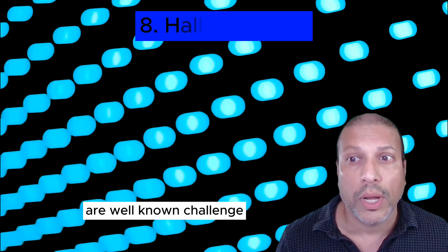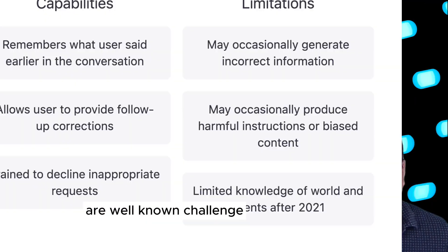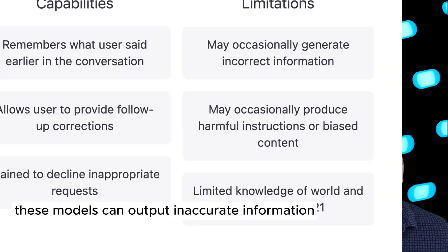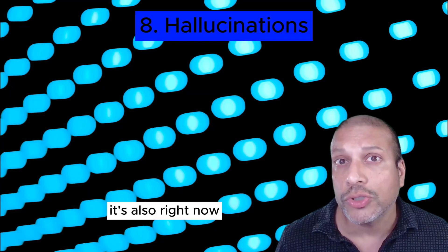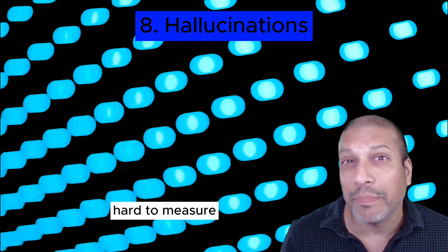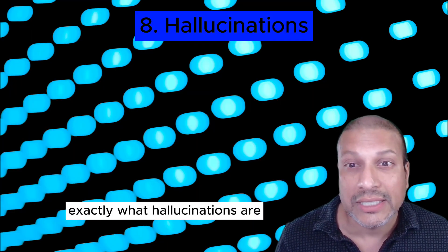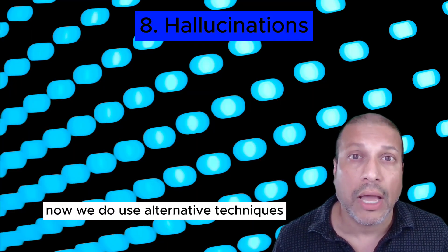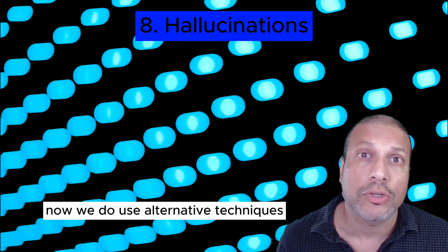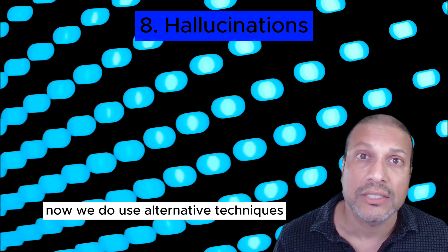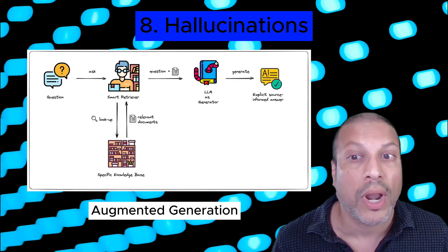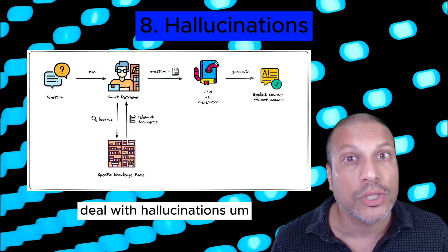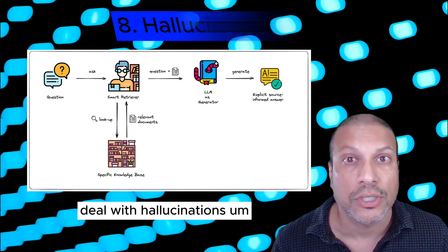Hallucinations are a well-known challenge. These models can output inaccurate information, and it can be hard to detect. It's also currently hard to measure exactly what hallucinations are. We do use alternative techniques like retrieval-augmented generation (RAG) as a way to deal with hallucinations.